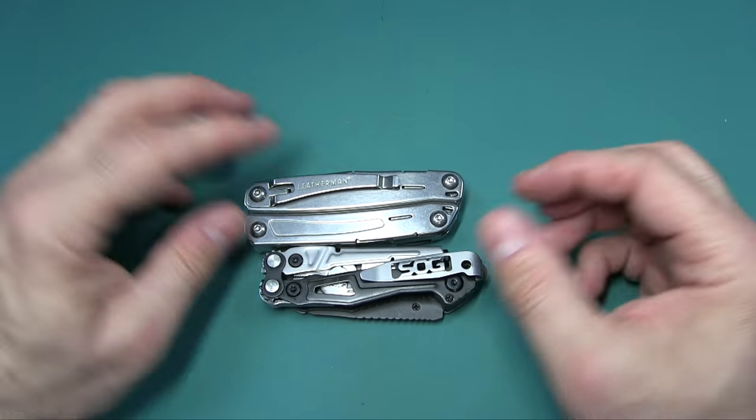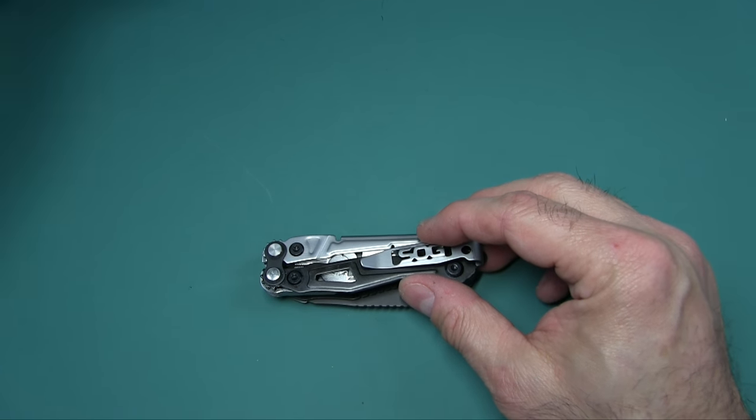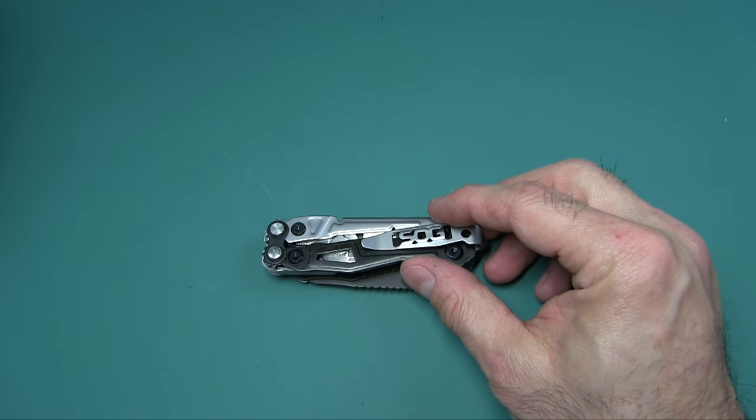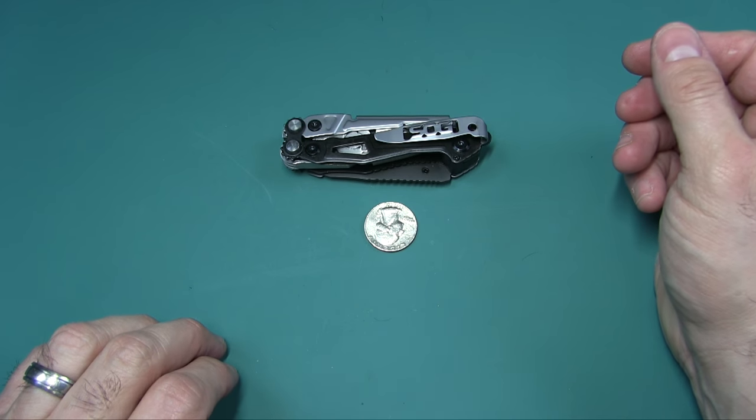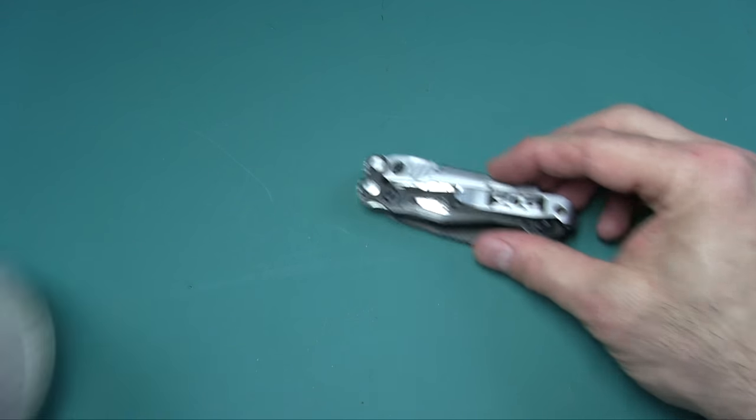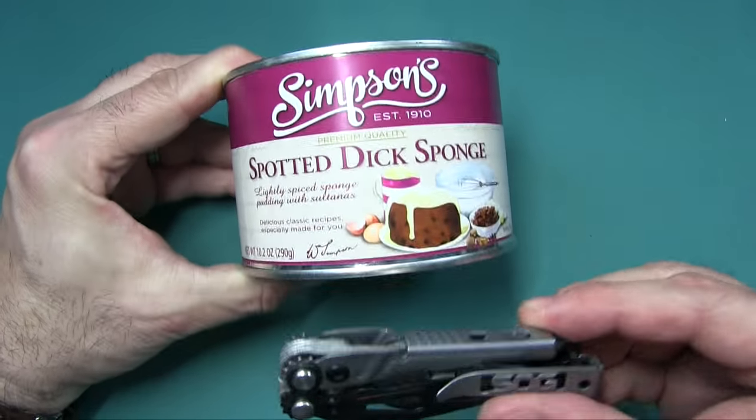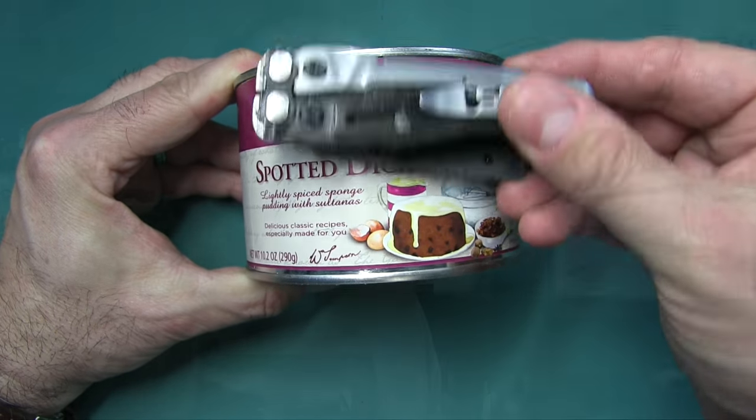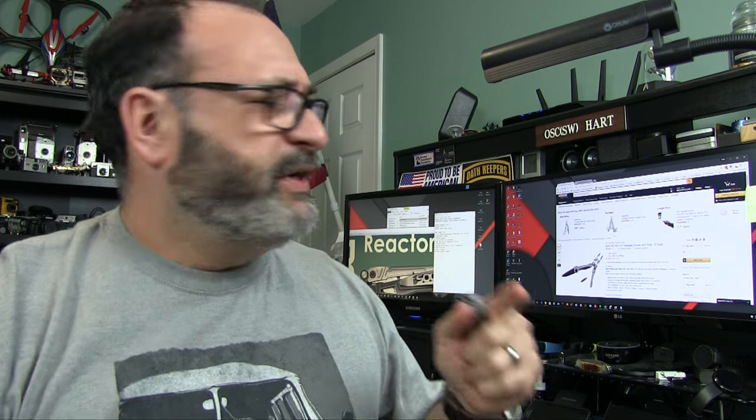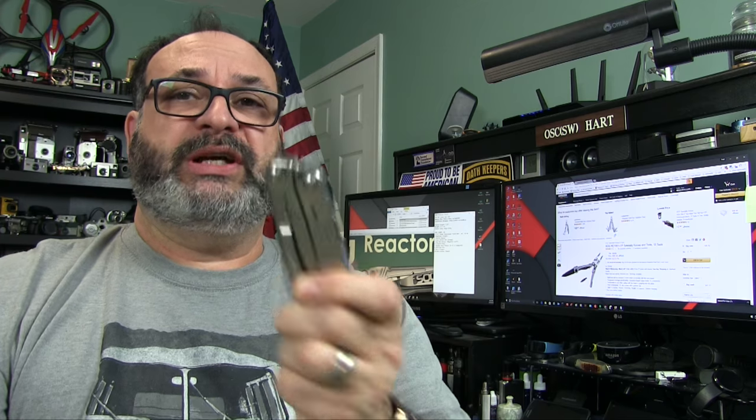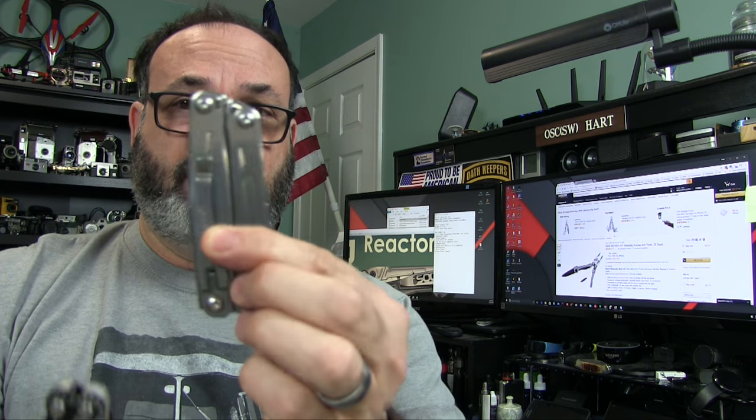Anyway, again, compared to the Leatherman Wingman. To the Gerber Suspension. There it is in size to the quarter. Here it is compared to a can of Spotted Dick. There you go. Comparison there. So you're not coming out of this video with a total fail. I went ahead and provided a link also in the description box below. A link to the Leatherman Wingman, which I recommend as a direct replacement and better choice over this piece of crap.